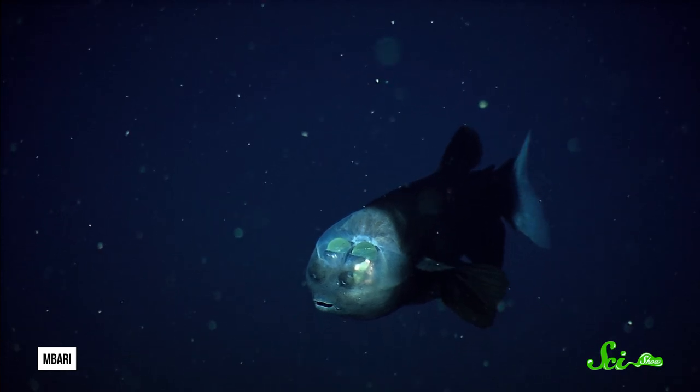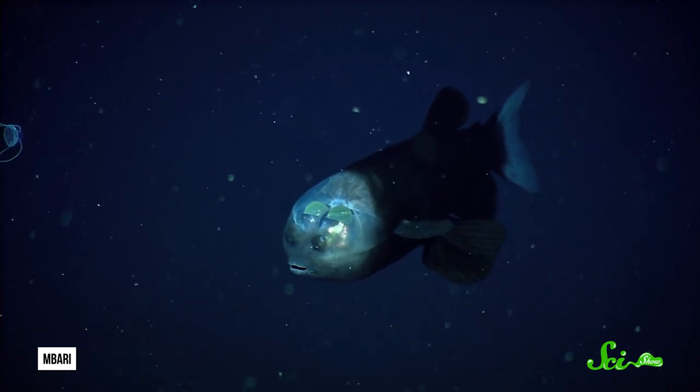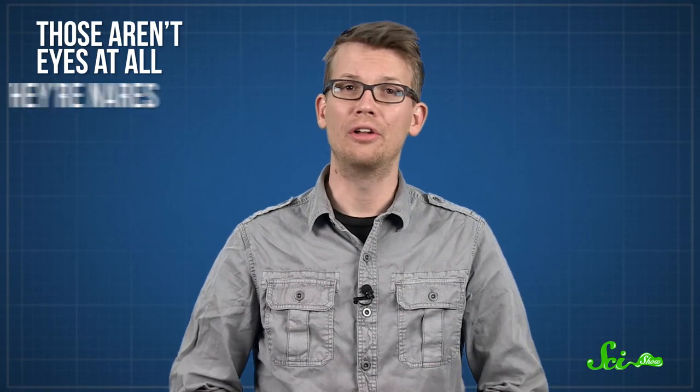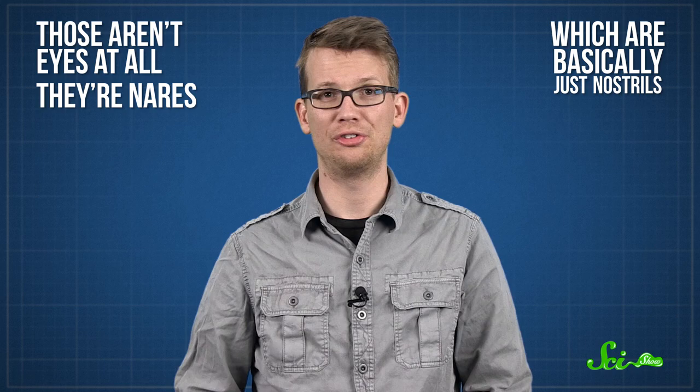And it turns out that, unsurprisingly, the fish's adaptations are exactly what it needs to survive. First, there's its eyes. And no, I'm not talking about those little black circles above its tiny mouth, where you'd normally expect to find eyes, because those are not eyes at all, they're nares,